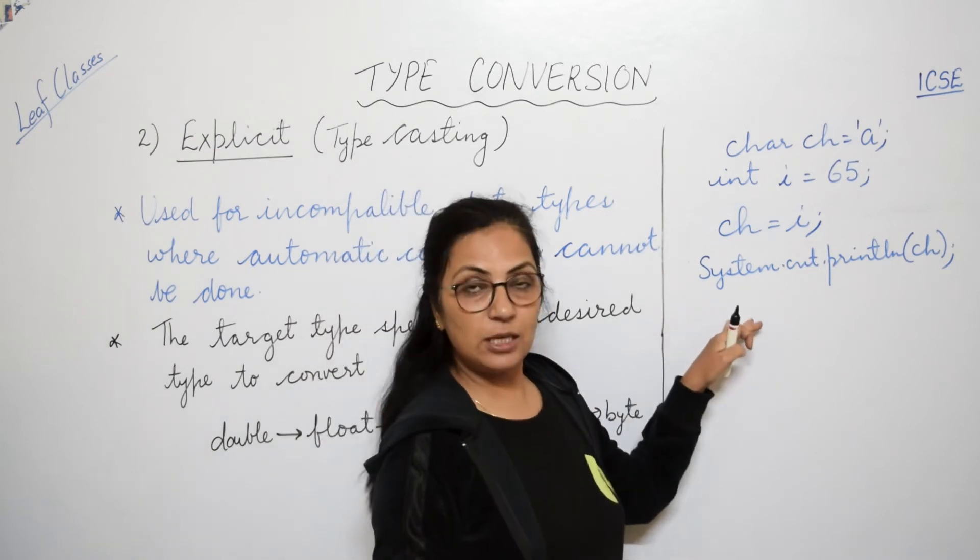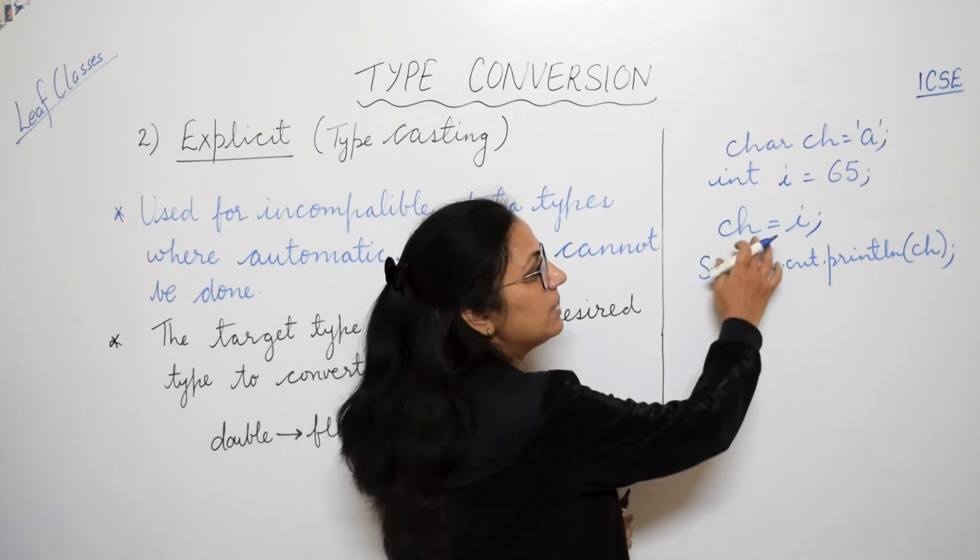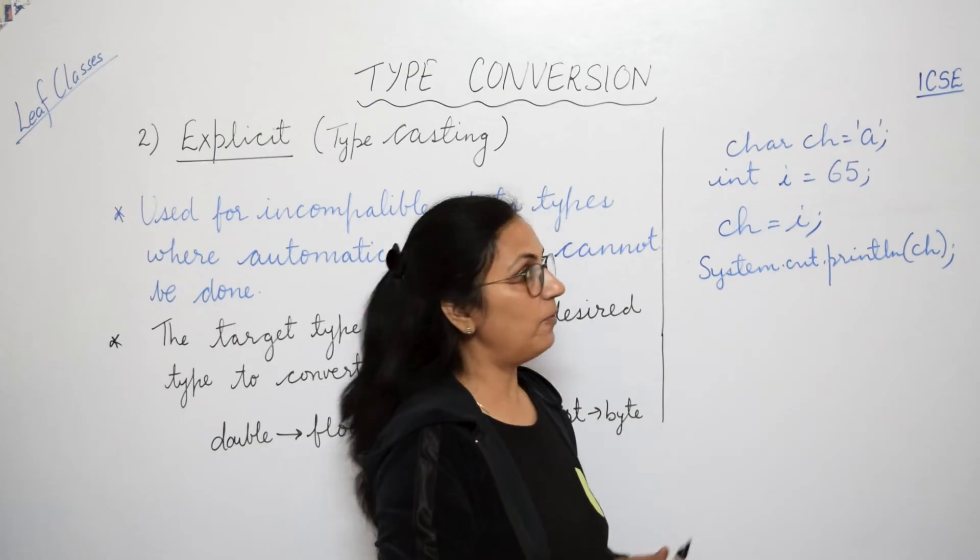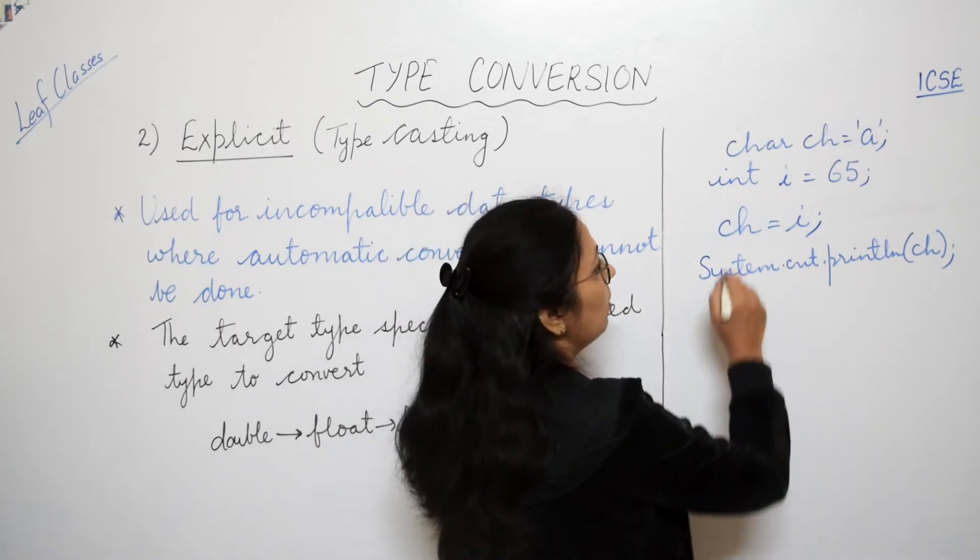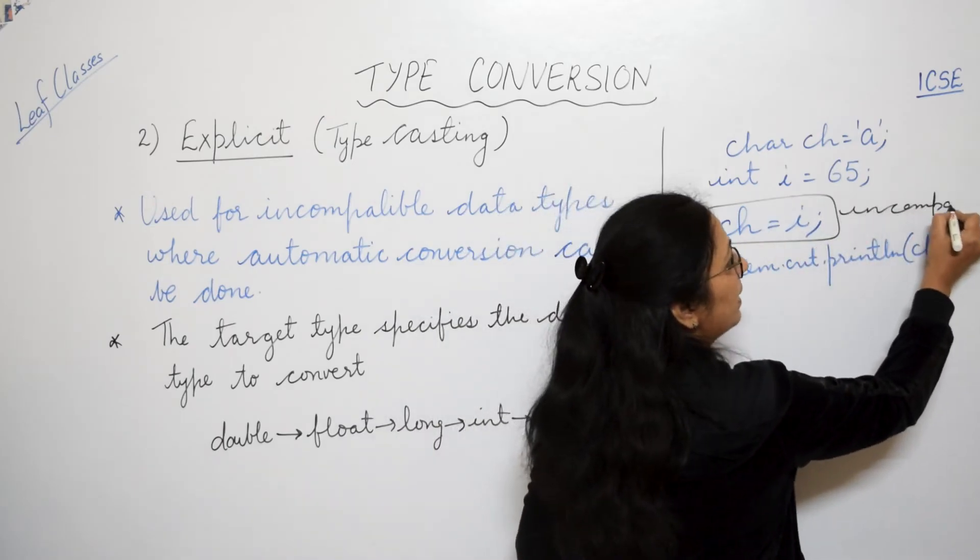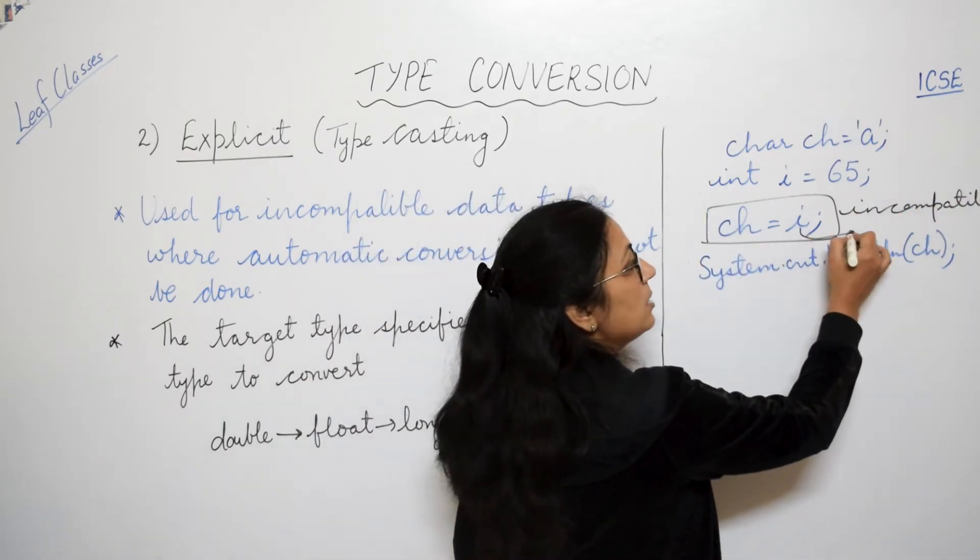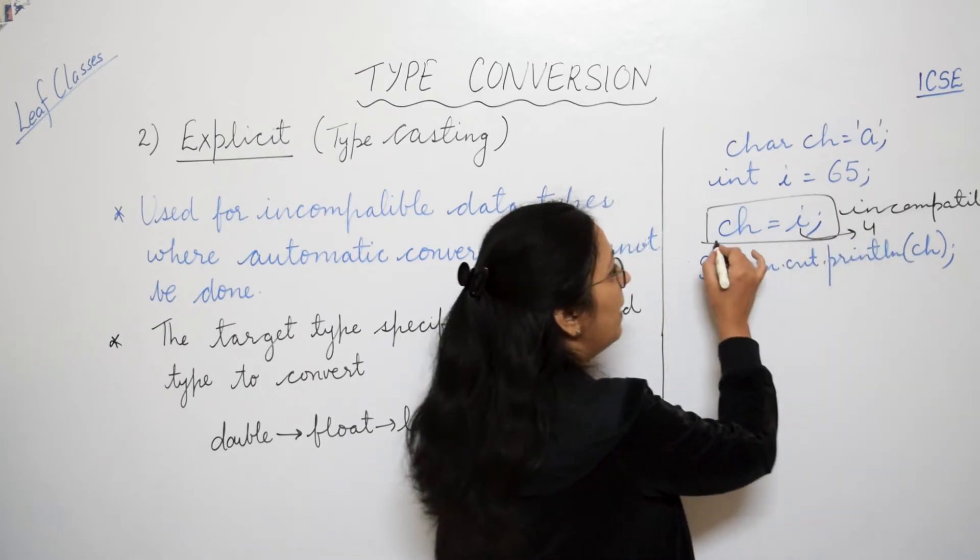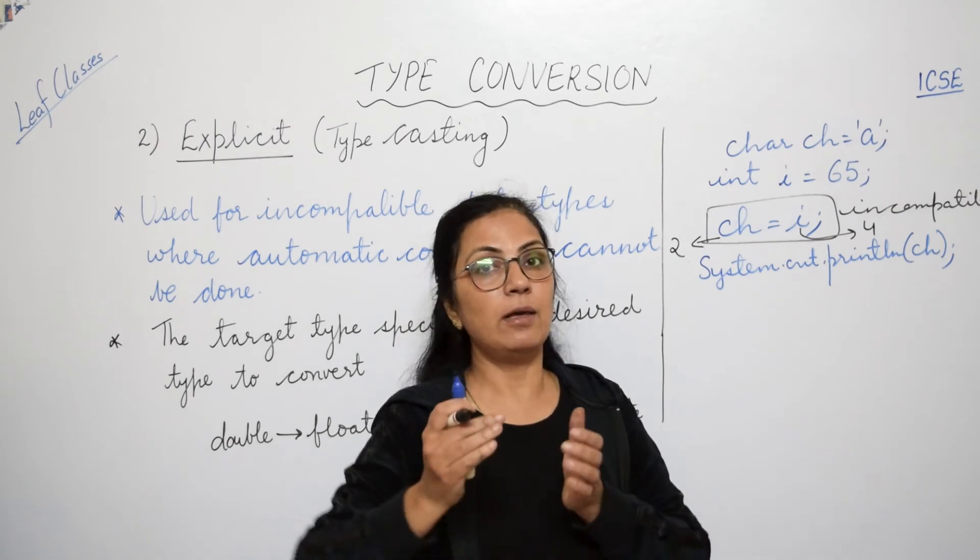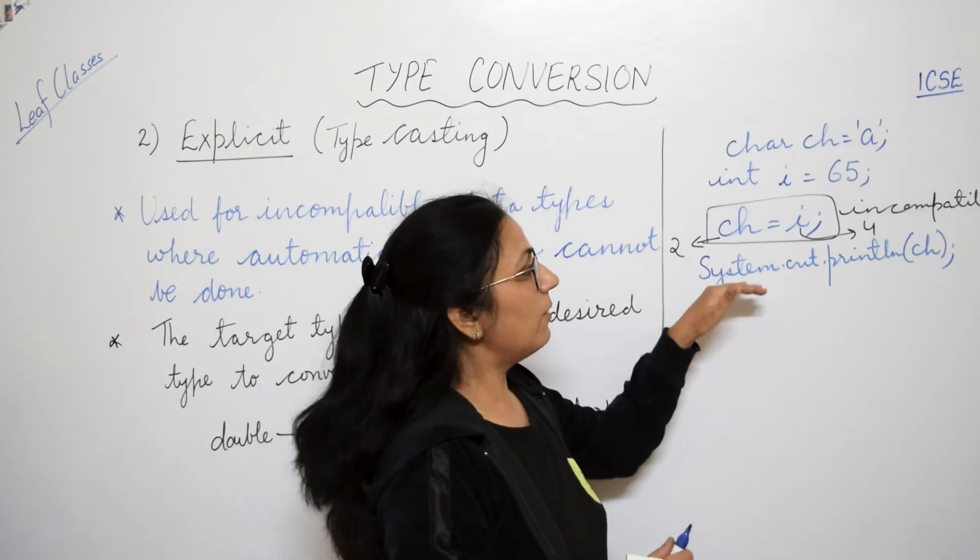Now children, if you will try to execute this. What we have given? Char ch equals to a. Int i equals to 65, and ch equals to i. Ch is char data type and i is int data type. When you will try to compile this, it will give you error over here. What will be the error? Error will be incompatible data types. Incompatible data types means here, the size of int is 4 bytes and the size of char is 2 bytes. And we are trying to put the value of 4 bytes into 2 bytes. That is not possible.